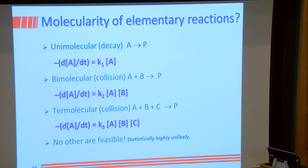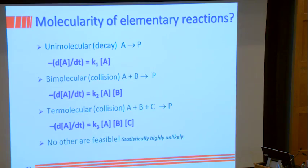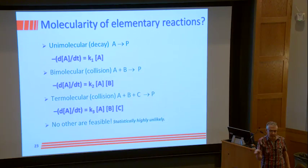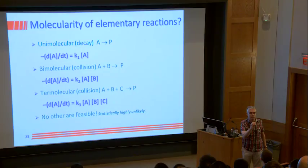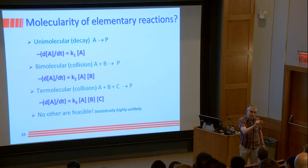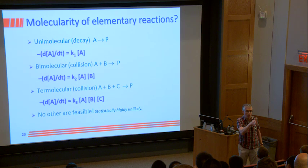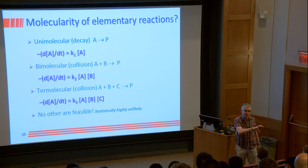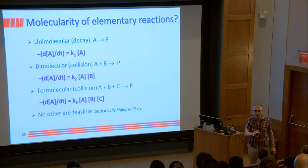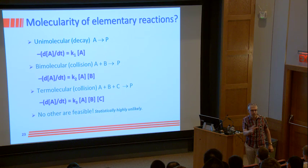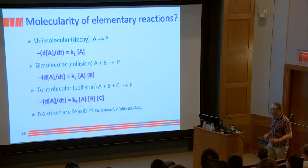There are exceptions: H + O₂ + M → HO₂ + M is third order, with rate = k[H][O₂][M], where M is all species in the system. This is an important reaction in combustion. But typically for termolecular reactions involving intermediate species, the reverse rate constant is set to zero because the likelihood of three species reacting together to give products is statistically very unlikely. Tetramolecular is completely unlikely.